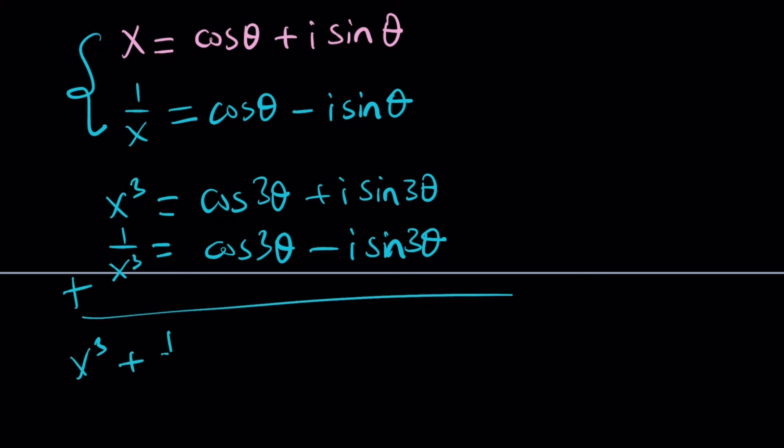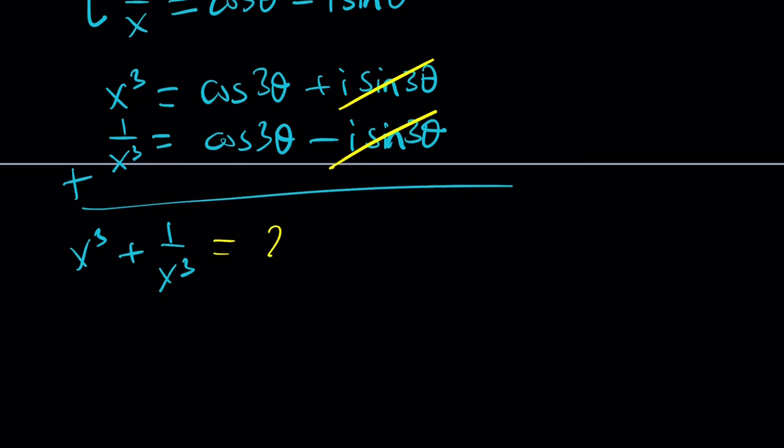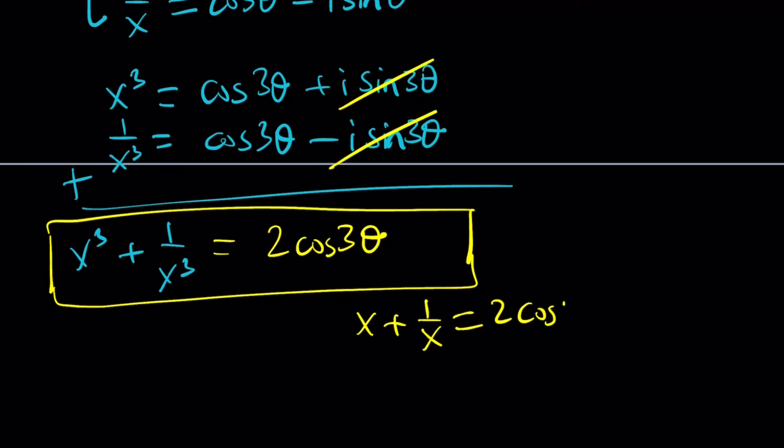And when you add these up, x cubed plus 1 over x cubed, sine 3 theta is going to cancel out, leaving us with 2 cosine 3 theta. And that would actually be the answer in terms of theta. Remember, we had x plus 1 over x equals 2 cosine theta. And then when we cubed it or added the cubes, we just had to triple the angle. We didn't mess with the 2. It just stays like that. That's what's special about these types of problems. Okay?